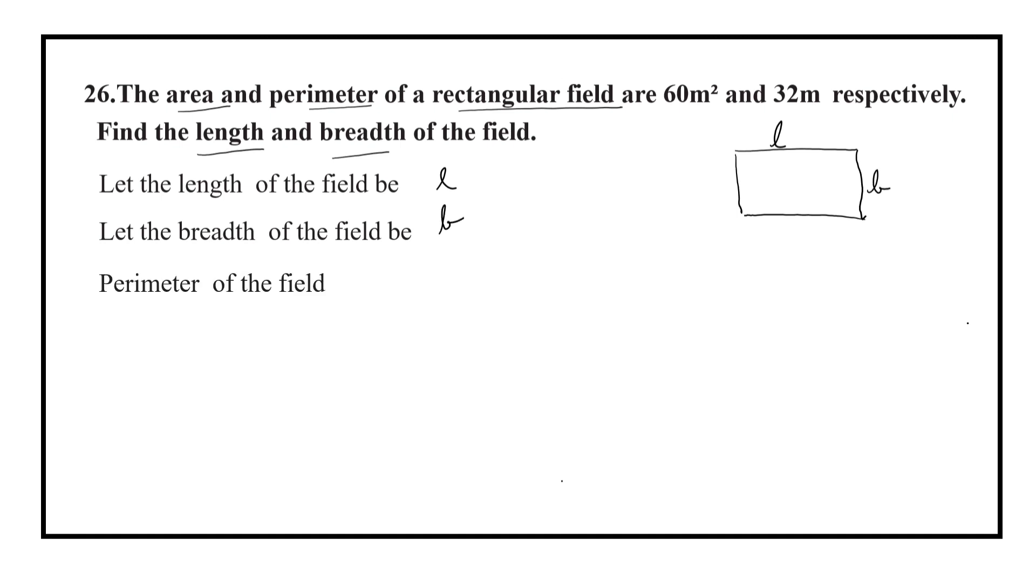Perimeter of the rectangle is equal to 2 into L plus B. In the question, it is given that the perimeter of the rectangle is 32. I transpose 2 to RHS, so L plus B is equal to 16. Let us express B in terms of L. It implies that B is equal to 16 minus L. Let this be equation 1.